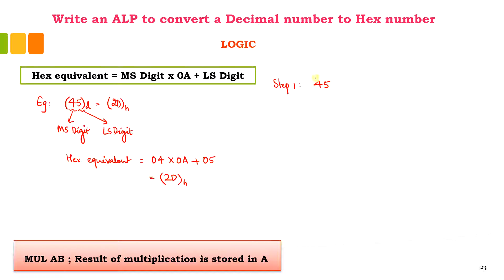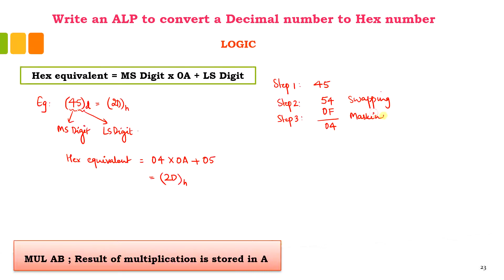To obtain the MS digit, we are going to swap the number first. When you swap 45, it will become 54. Then we will mask this with 0F and obtain 04. So step 2 is performing the swapping and step 3 is performing the masking. With swapping and masking, you have obtained the MS digit, that is 04.